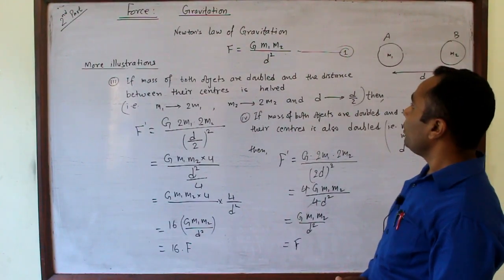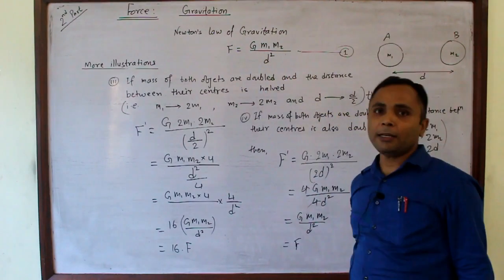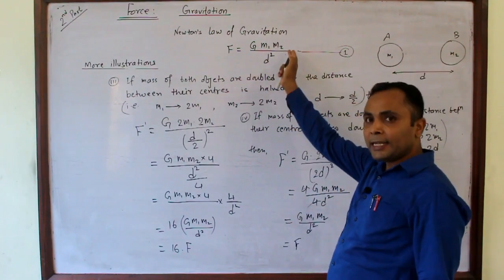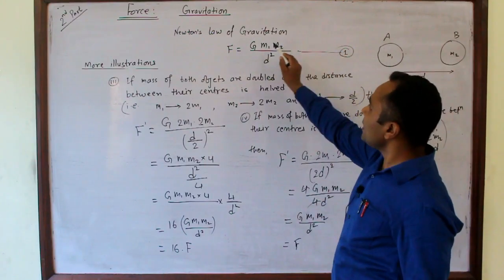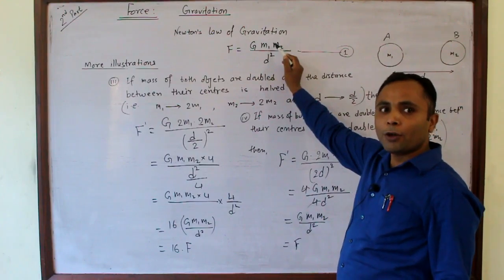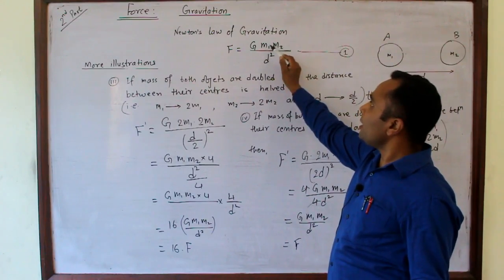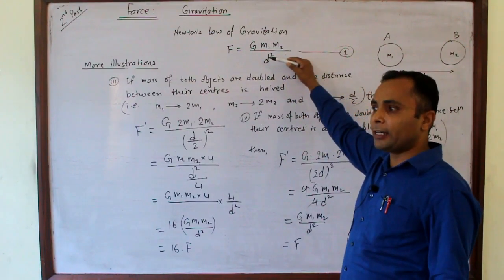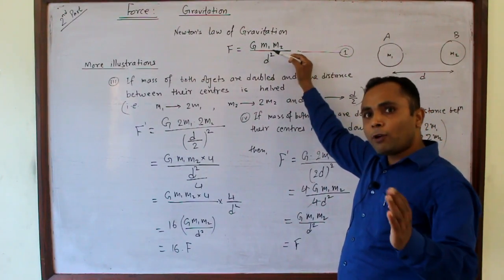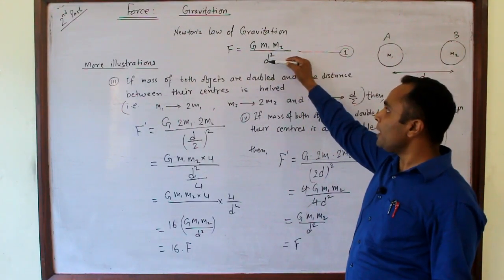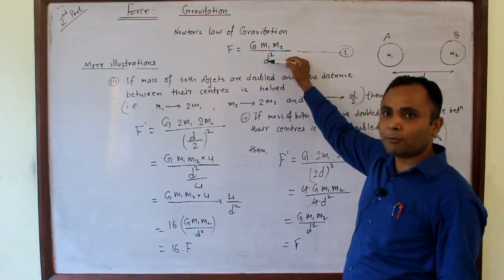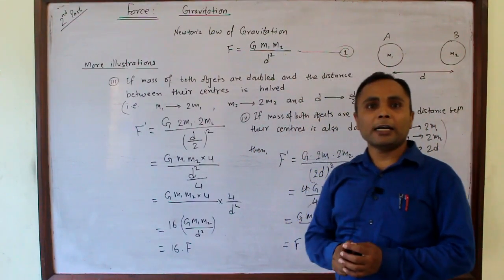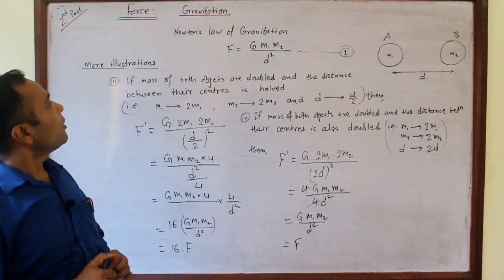We have learned about Newton's law of gravitation and the factors that affect the value of gravitational force — those are the masses and the distance. Quantities in the numerator affect the force directly: when one mass is doubled the force doubles; when both masses are doubled it becomes 4 times. But distance inversely affects the force as the square: if distance is doubled, the force reduces by 4 times; if distance is halved, the force increases 4 times. You can exercise with more examples.